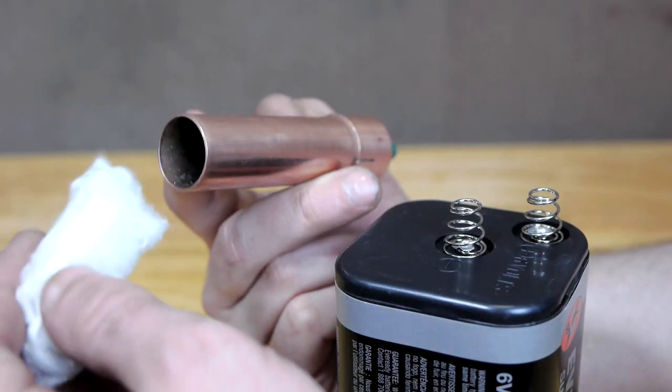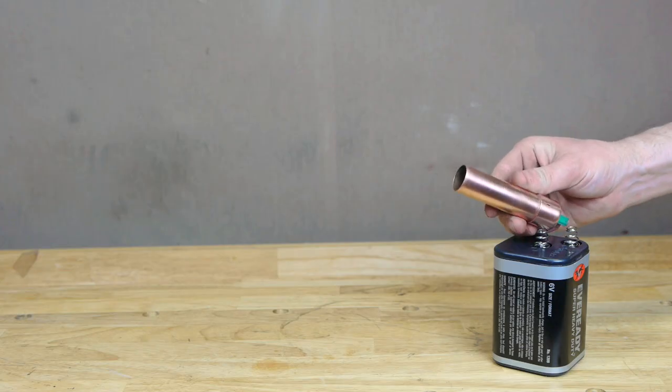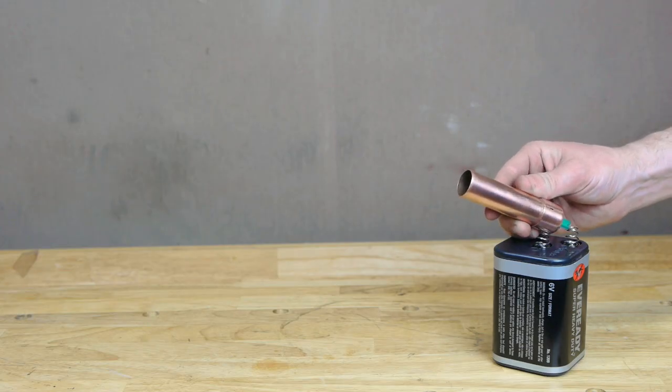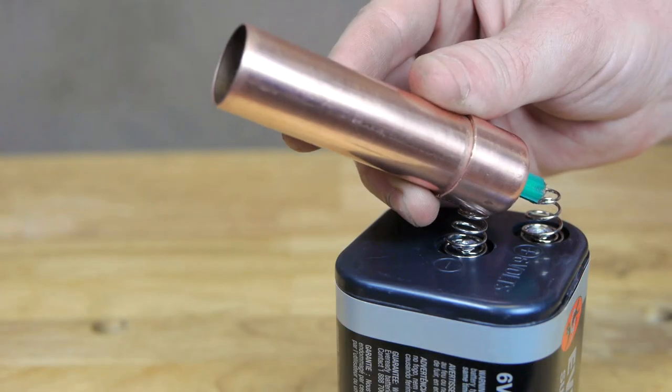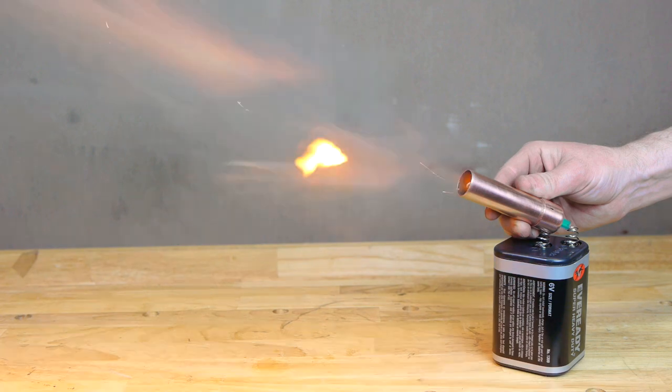Once these cartridges have been partially filled with flash cotton, all that needs to be done to heat the nichrome wire is to connect one terminal of a battery to the copper tack, and the other terminal to anywhere else on the metal casing. This completes the circuit, and the shell fires.